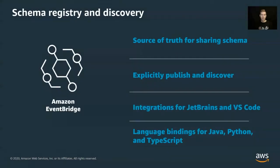EventBridge also has a schema registry and discovery feature. When building different services with different teams, teams need to know the details of specific events. Using the schema registry, you can store the patterns — schemas — for how events look, serving as a source of truth for teams. The discovery feature automatically discovers schemas for different event types. There's also built-in IDE integration for VS Code and JetBrains to make it easier for teams to work with schemas.